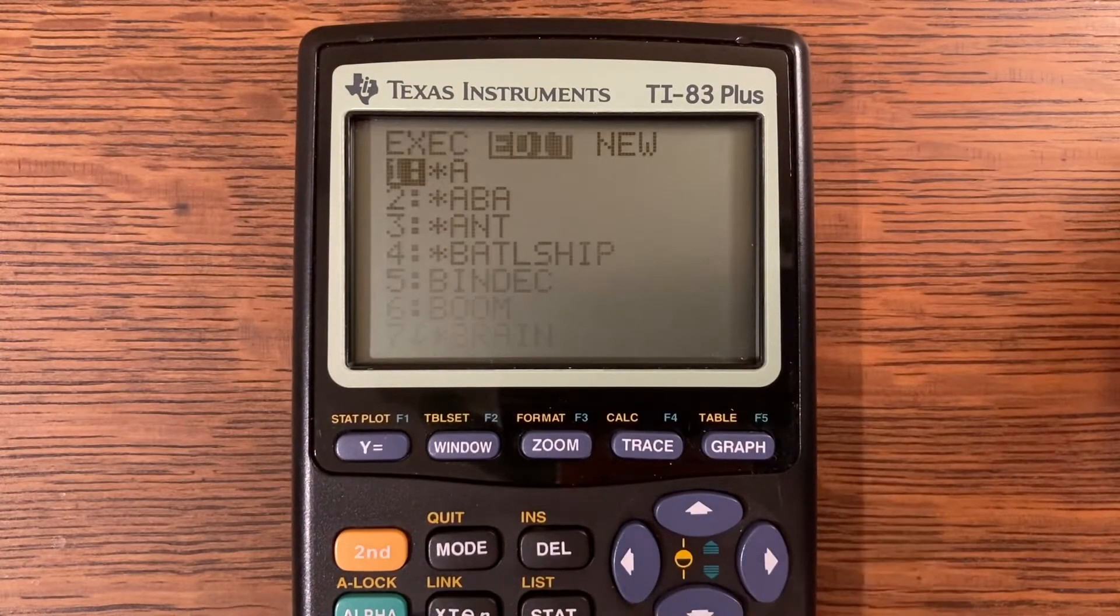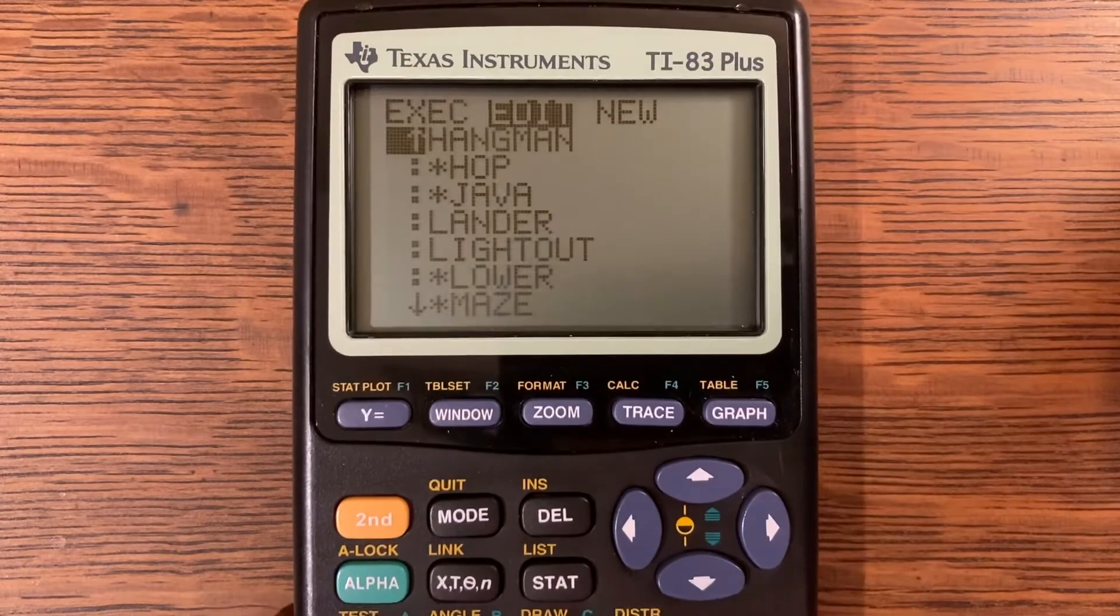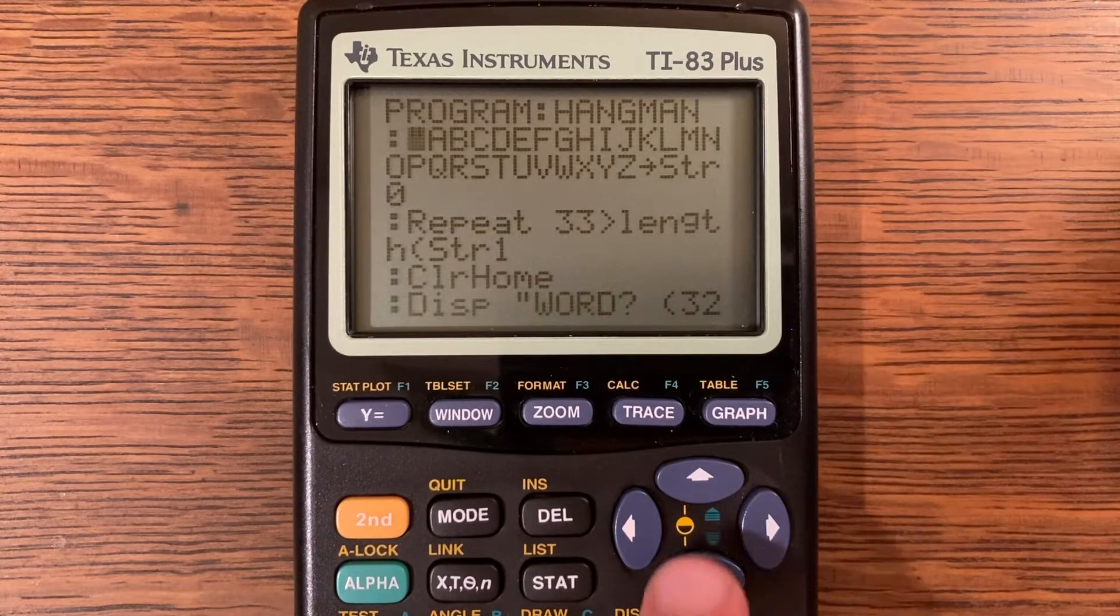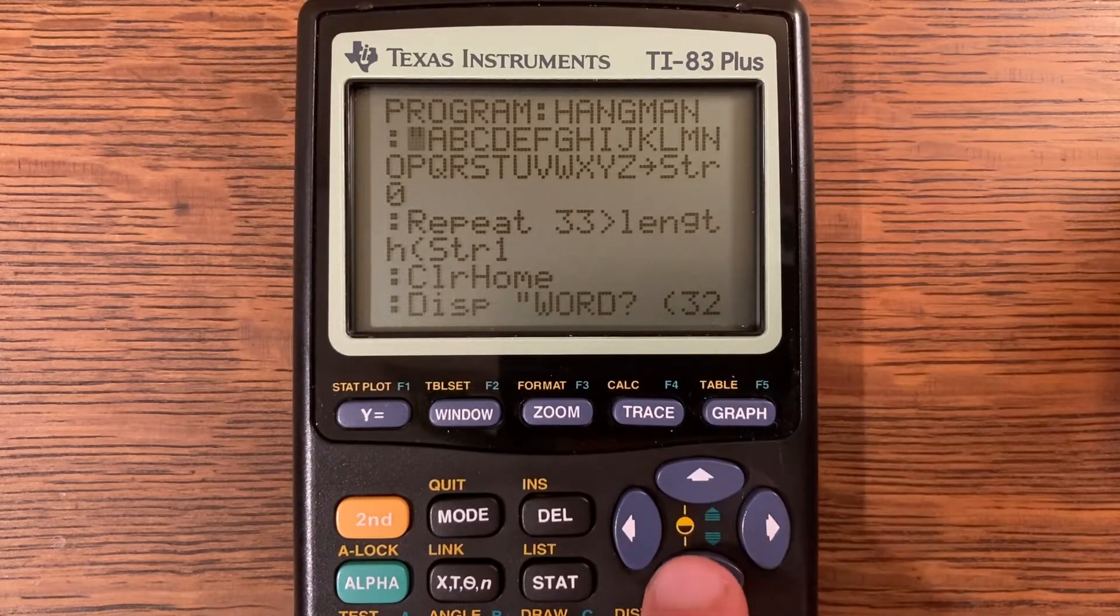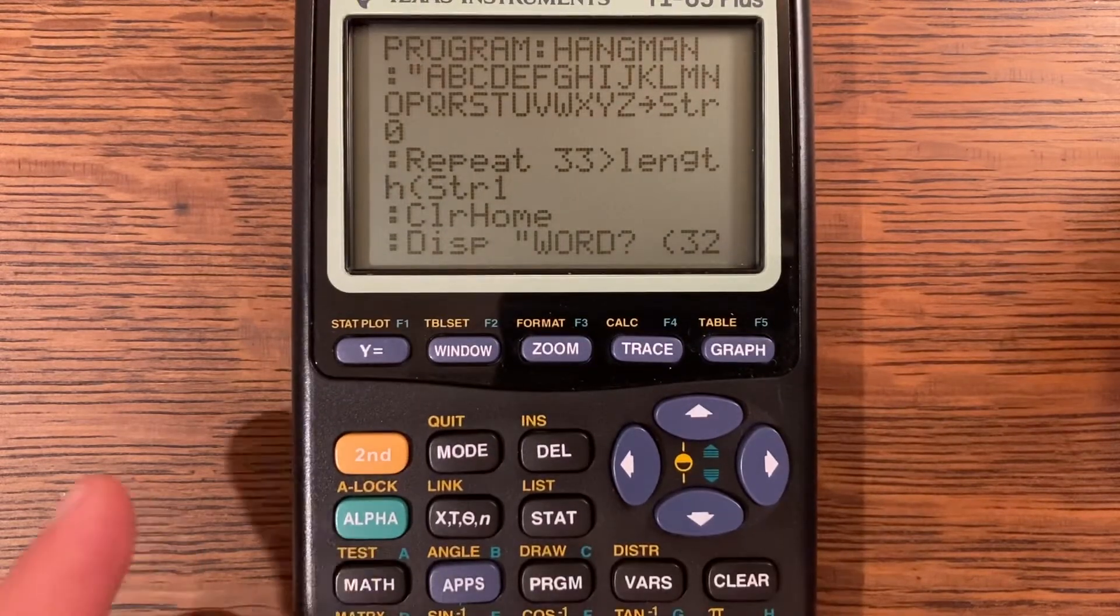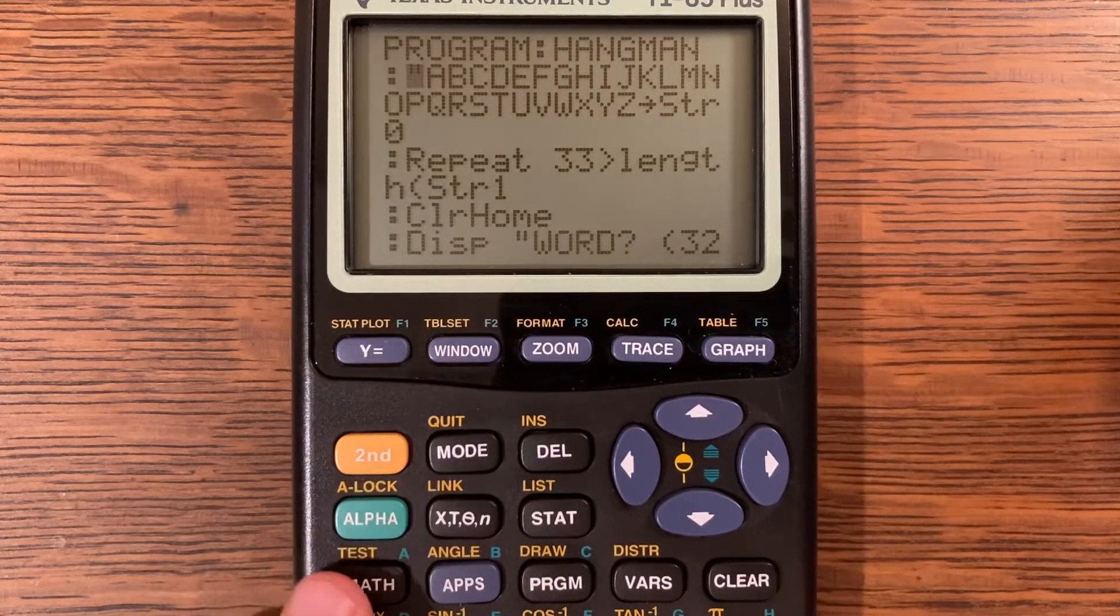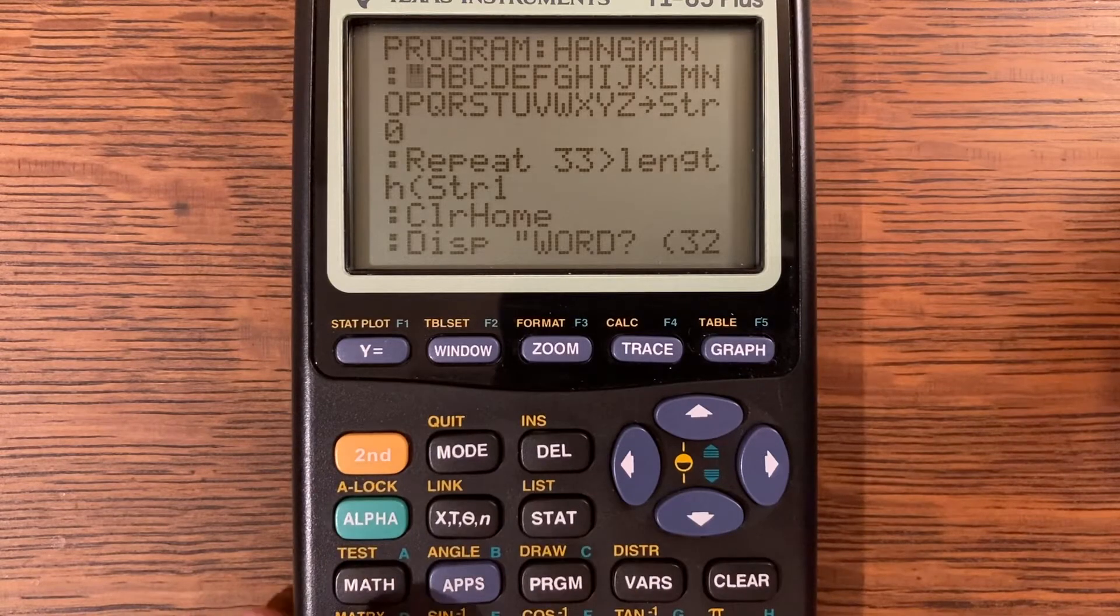Now I'm going to go to edit program Hangman and you're going to see that we start off with the whole entire alphabet stored into string zero. Just to make sure that you know how to put in letters, you do alpha and the corresponding key to whatever letter you want.